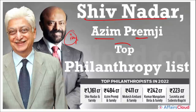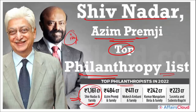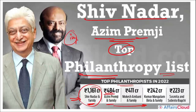Shiv Nadar and Azim Premji have secured the top positions in the philanthropy list. Shiv Nadar and family topped with Rs. 1,161 crore donated, followed by Azim Premji and family with Rs. 484 crore. Third position was held by Mukesh Ambani and family, followed by Kumar Mangalam Birla and family, and Shushmiita and Subroto Bagchi.